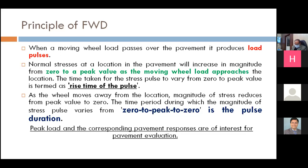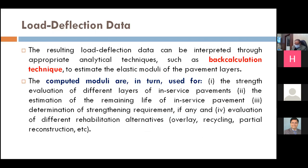When a moving wheel load passes over a pavement it produces load pulses — going from zero to peak and back to zero as the load moves away. Rise time of the pulse is important, and the overall pulse duration (zero to peak and peak to zero) is also very important. These are the pavement responses we monitor with FWD. Once we have load-deflection data — which is acquired in the cabin of the FWD with a complete data acquisition system, along with pavement temperature, tire pressures, and GPS — we have to select an appropriate analytical technique.